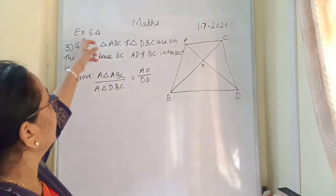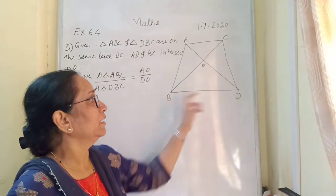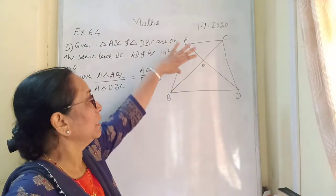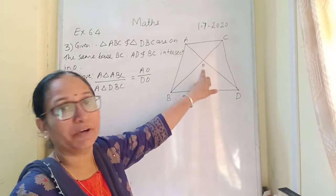Now children, question number 3 of the exercise says triangle ABC and triangle DBC are on the same base BC. Correct? BC and AD intersect in point O.